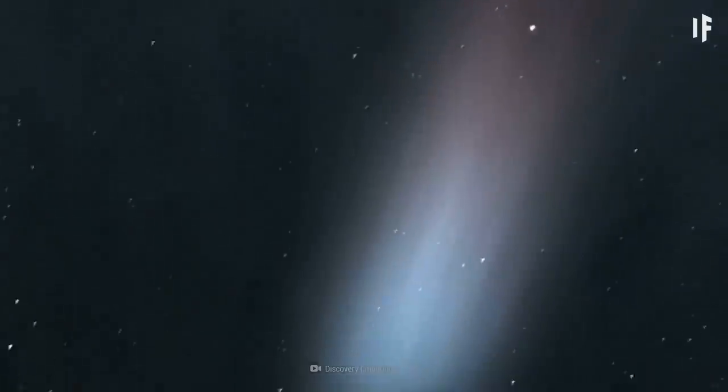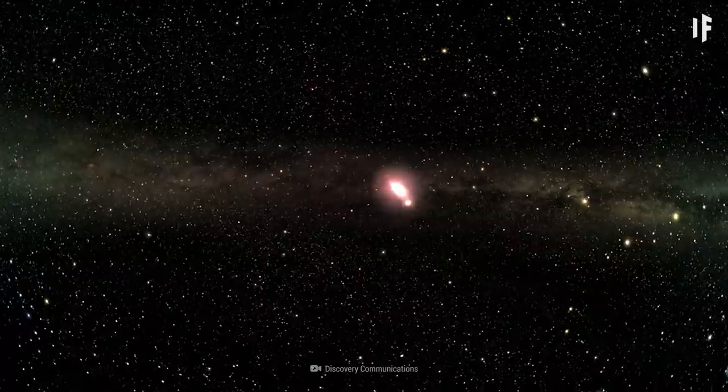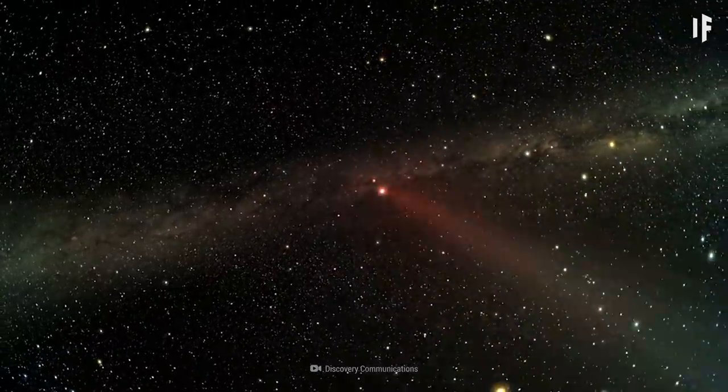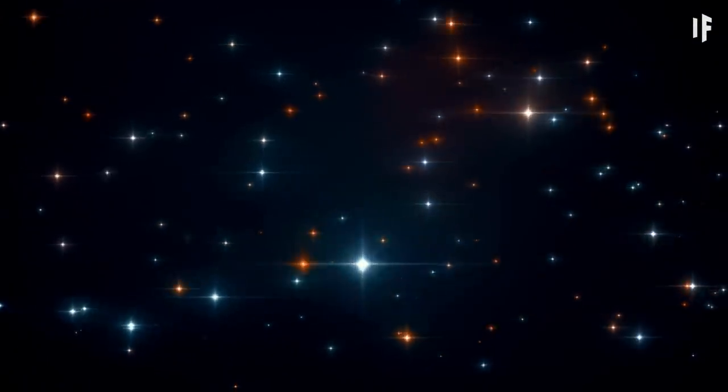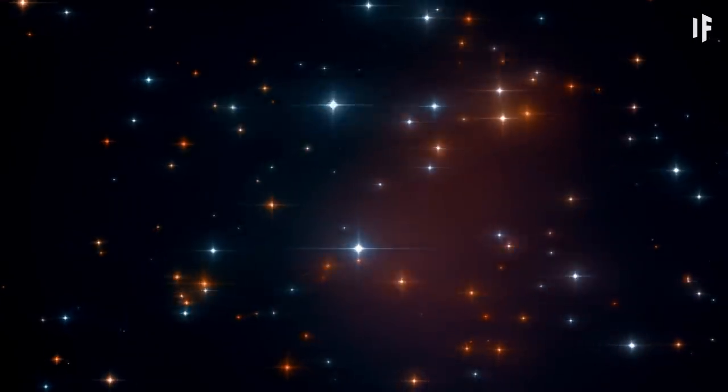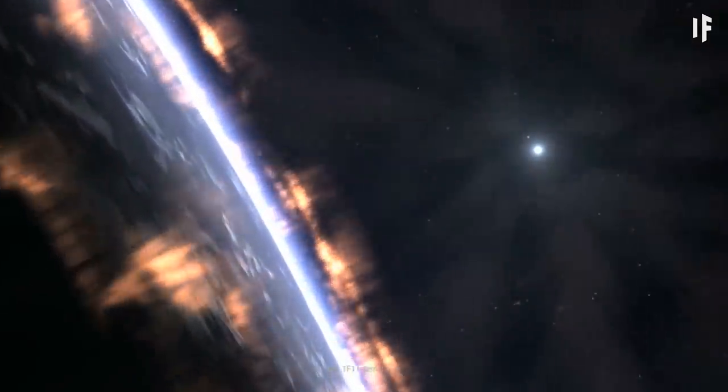It would take over 1,000 years for those gamma rays to hit our planet if the closest black hole, H.R. 6819, exploded. So while we might see several hundred new bright spots in the sky, it would take a millennium before our planet would feel its effects.